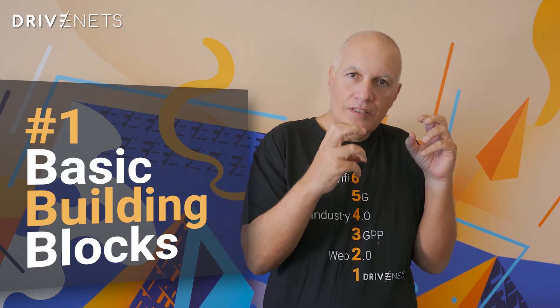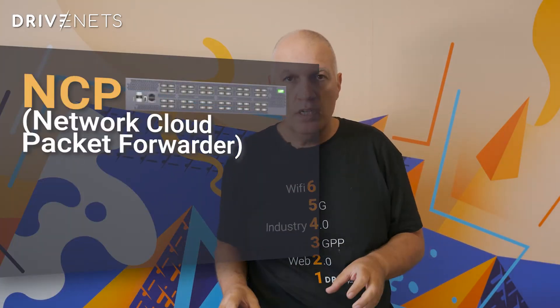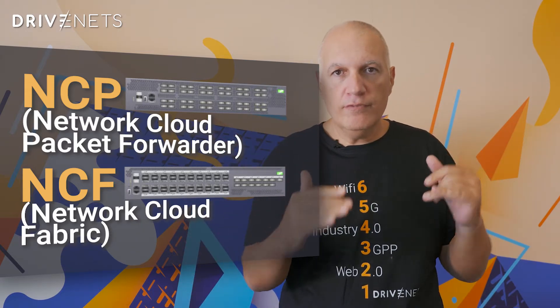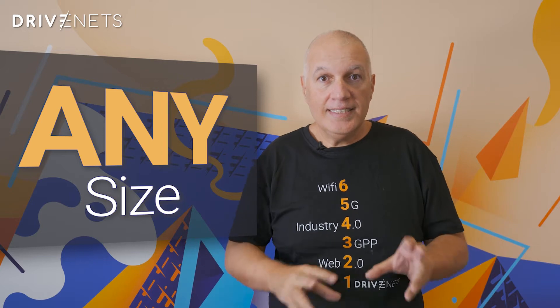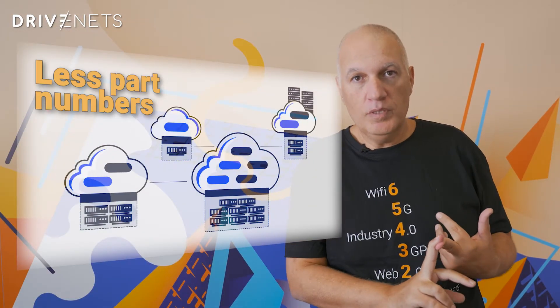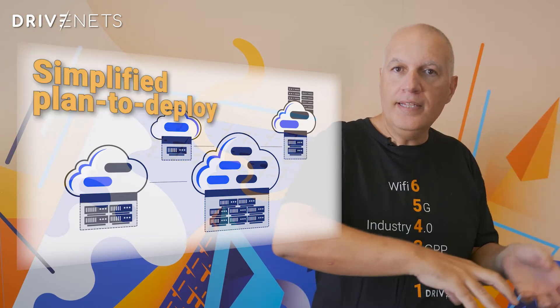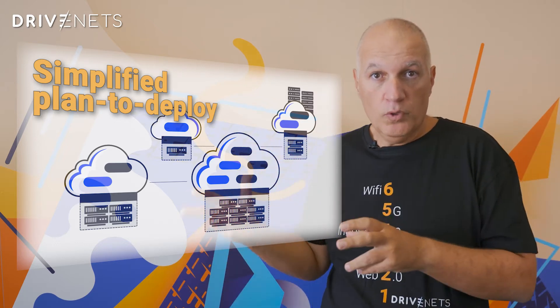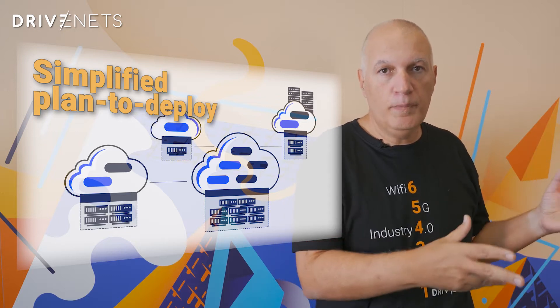Number one, basic building blocks. We take just two building blocks — the NCP and the NCF, that's the Network Cloud Packet Forwarder and the Network Cloud Fabric. Those two building blocks come in a very compact form, just two rack units high. From those two building blocks, you can build any size and any scale of network. This means fewer part numbers in your network, and the entire plan-to-deploy cycle is simpler and easier in terms of engineering, deployment, and maintenance and spare parts. Avoiding vendor lock-in was never that easy.